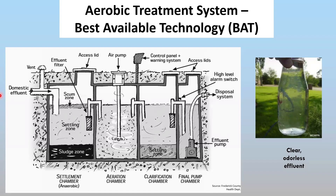Walking through this diagram, wastewater comes in from your house by gravity and goes into the first chamber — the settling chamber, much like a septic tank. Heavy solids settle down, fats and grease float, and the clarified wastewater in the middle moves into the aeration chamber. Aeration is provided by different means depending on the manufacturer — a bubbler, an agitator, etc. — supplying the oxygen needed for beneficial bacteria to break down organics and nutrients.